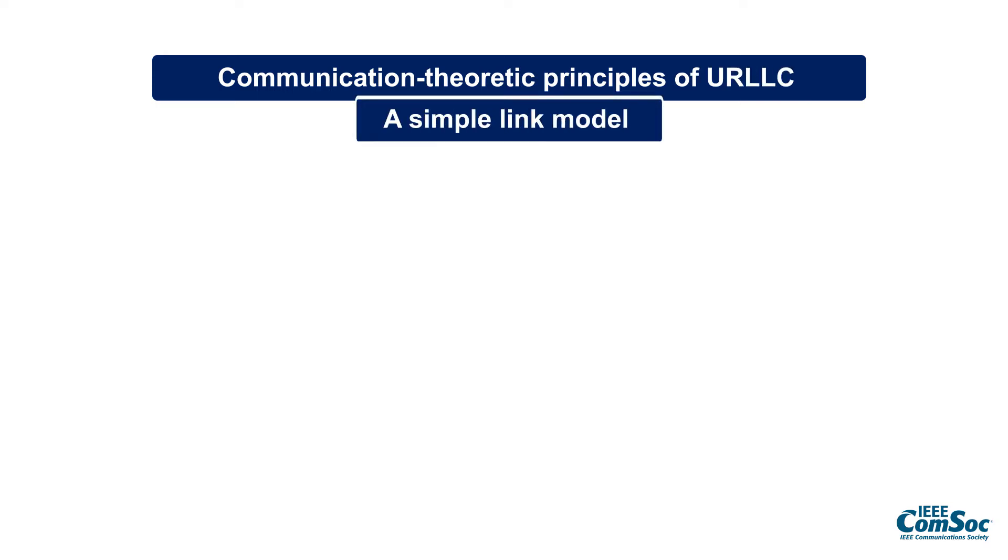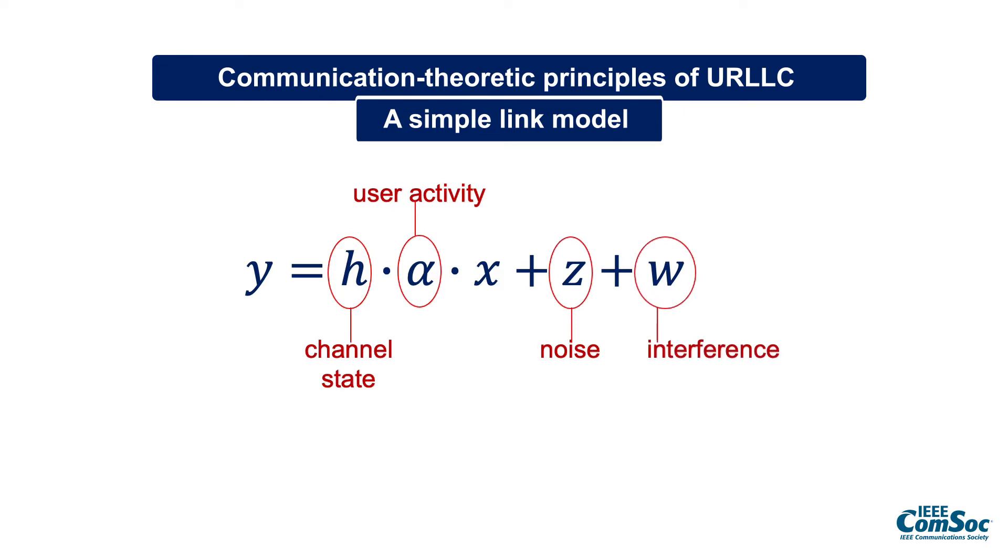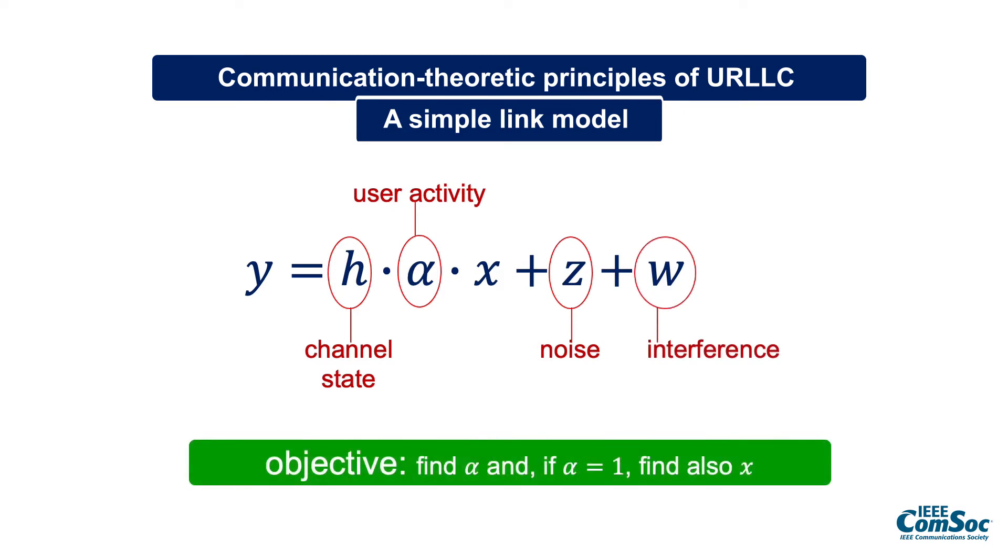To introduce the communication theoretic principles of URLLC, we start from a simple link model where X is the transmitted signal, Y is the received signal, Alpha is the user activity which equals 1 if the user is active and 0 otherwise, H is the channel state, Z is the noise, and W is the interference. The objective is to find whether the user is active and, if so, to find the data that the user is transmitting.